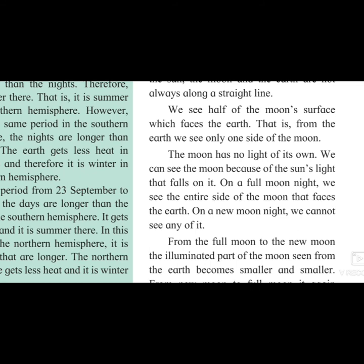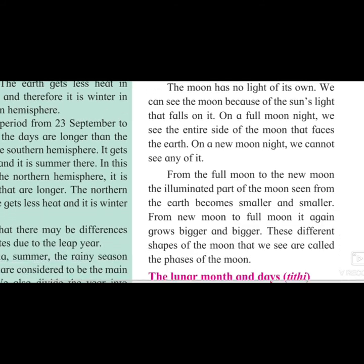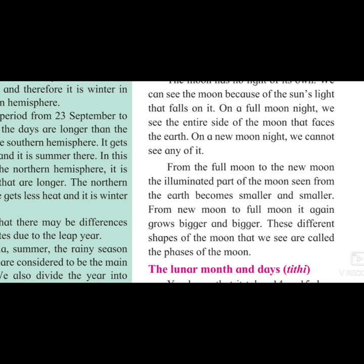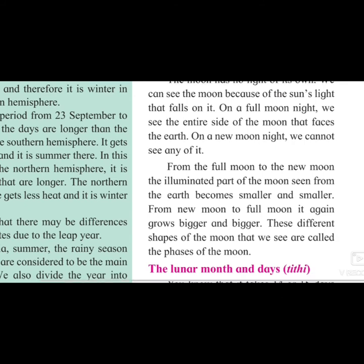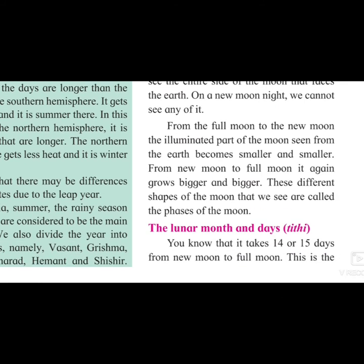On a full moon night — Purnima — we see the entire side of the moon that faces the earth. But on the new moon night — Amavasya — we cannot see any part of it because it is not visible from the earth's side. From full moon to new moon, you can see the moon changing its shape and getting smaller. These different shapes of the moon are called the phases of the moon.